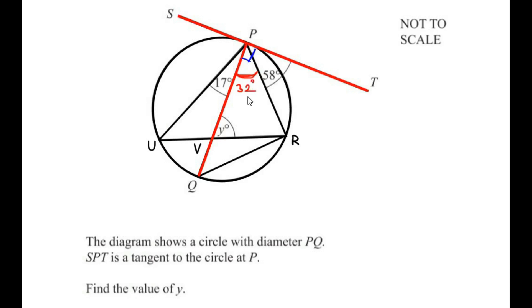Now we are going to make use of the second theorem, that is the angles in the semicircle theorem. PQ is the diameter of the circle and it makes an angle in the semicircle at point R. So using the theorem, angle R is going to be 90 degrees, since the angle in a semicircle is always 90 degrees.